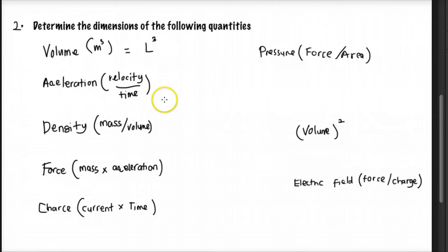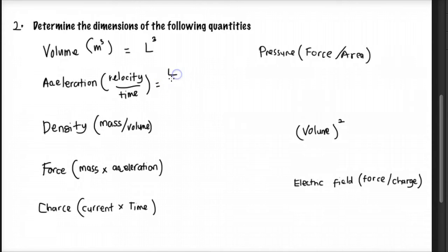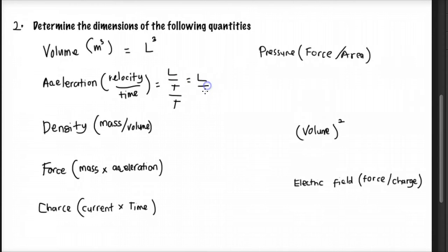Next is acceleration. Acceleration is velocity over time. Velocity is meters per second, which is L over T, and then divided by time again. So the time terms combine and in the end it becomes L over T squared. That's the dimension for acceleration.